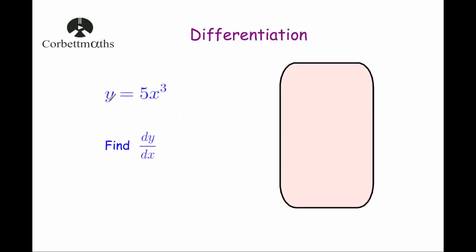Our next example: we've been given y equals 5x cubed, and we've been asked to find dy by dx. This is a little different because the x cubed term has a coefficient of 5 — there's a number in front of it. The technique is the same: bring the power down, multiply, then reduce the power by 1. We bring the 3 down, do 5 times 3 which is 15, then write x squared. So if y equals 5x cubed, dy by dx equals 15x squared.